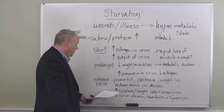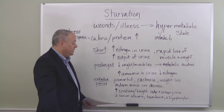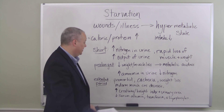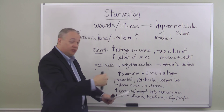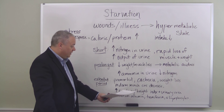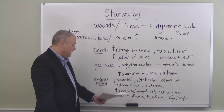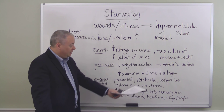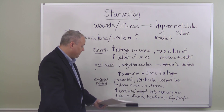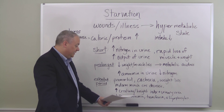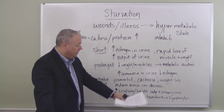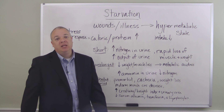Over the extended period, pre-morbidity sets in, cachexia develops, weight loss occurs, mid-arm muscle circumference decreases, the creatinine height index goes up as does the urinary urea, while the serum albumin, transferrin, and lymphocytes decrease.